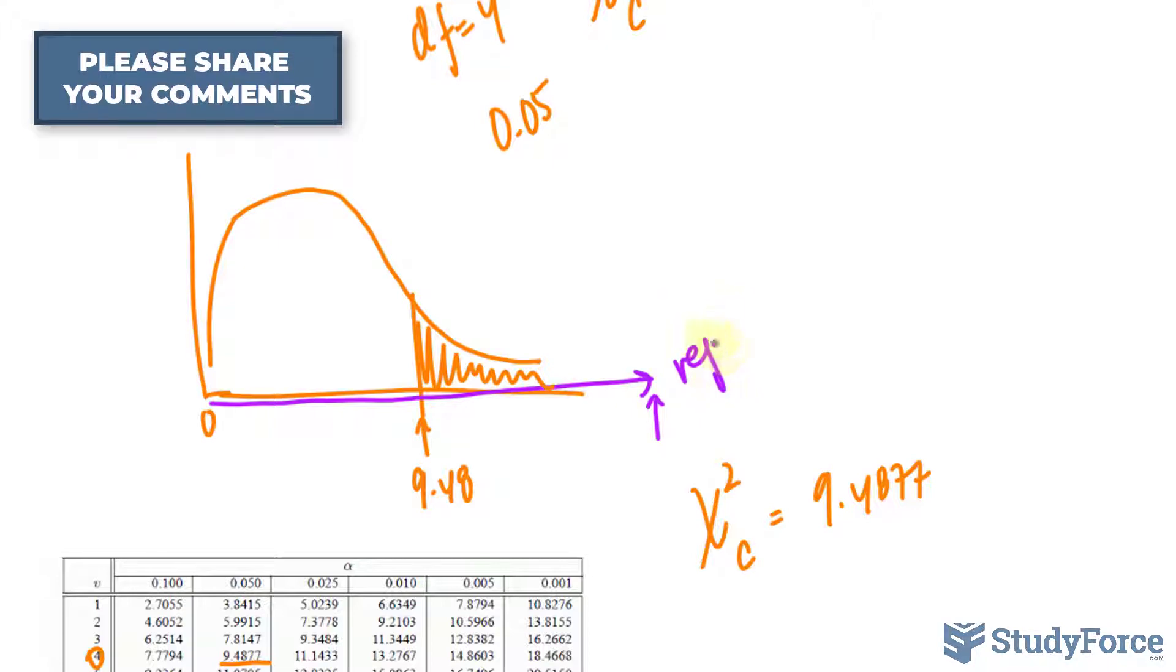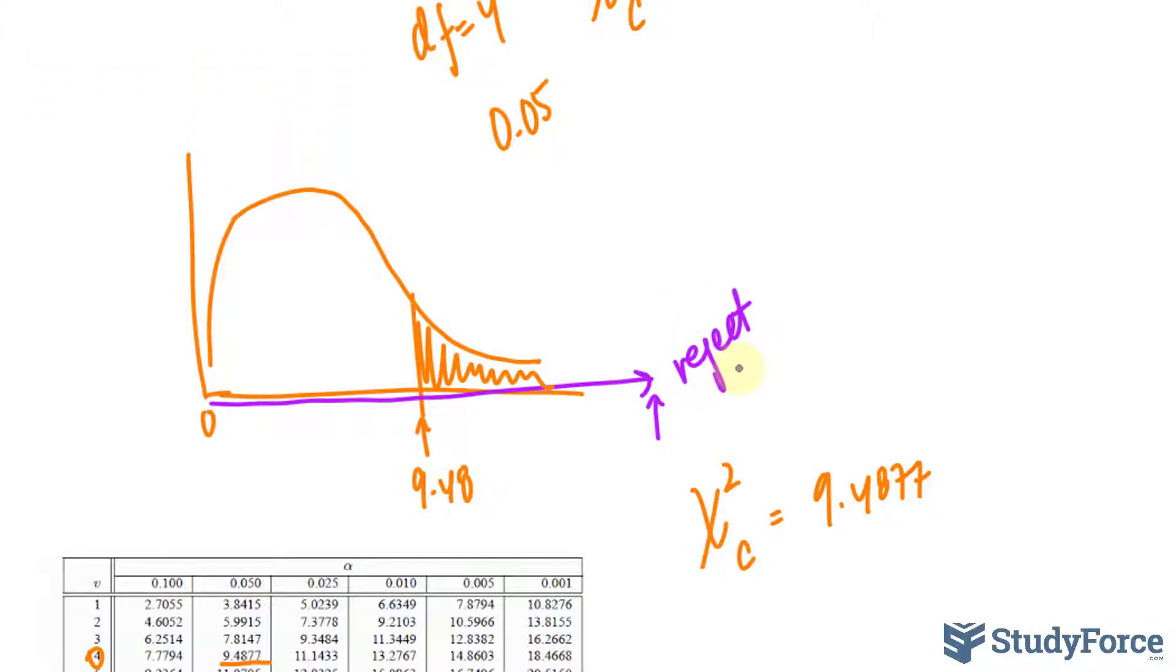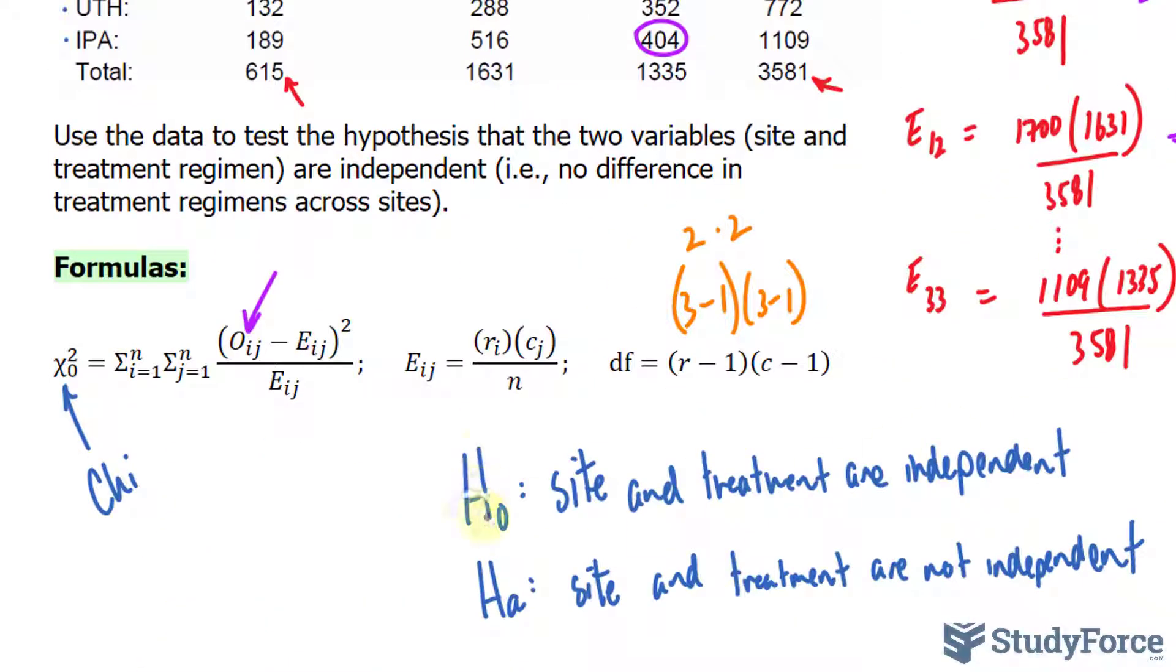And so we reject, we will reject the null hypothesis. We can conclude that there is sufficient evidence at zero point zero five that the site and the treatment are related. Think about it, we are rejecting the null hypothesis in favor of this. So this means that they are related when it's not independent.